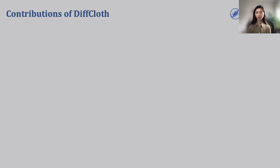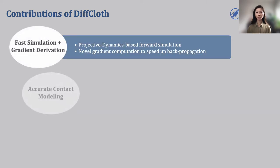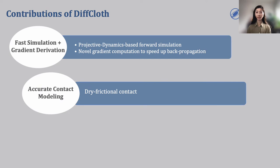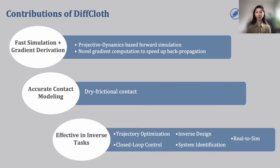In this work, we present DIFFCLOTH, a differentiable cloth simulator that is very fast, models dry frictional contact, and has demonstrated effectiveness in various inverse tasks. Its performance comes from projective dynamic-based forward simulation and a novel gradient computation trick to speed up backpropagation. We demonstrate the effectiveness of the simulator in tasks including system identification, inverse design, trajectory optimization, closed-loop control, and real-to-sim tasks.